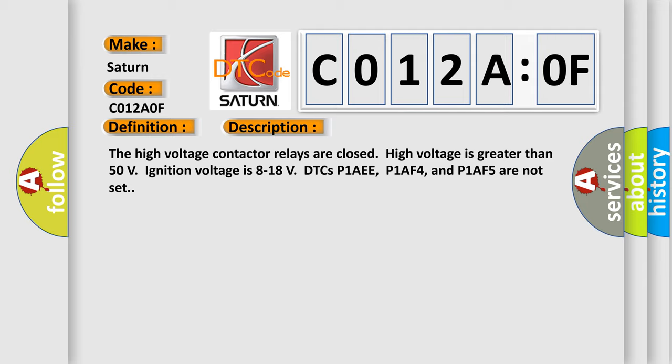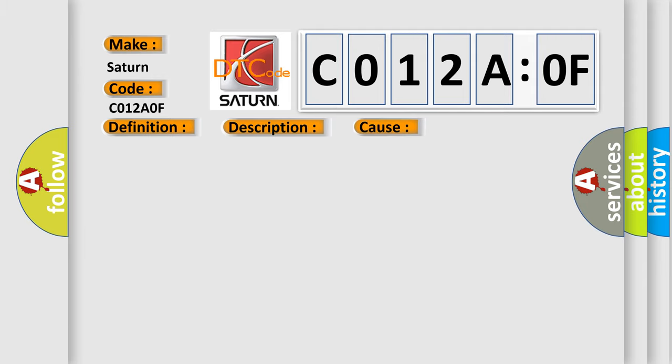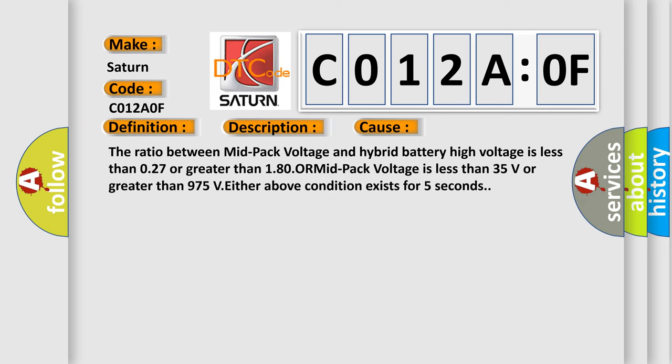This diagnostic error occurs most often in these cases: The ratio between mid-pack voltage and hybrid battery high voltage is less than 0.27 or greater than 1.80, or mid-pack voltage is less than 35 volts or greater than 975V. Either above condition exists for 5 seconds.